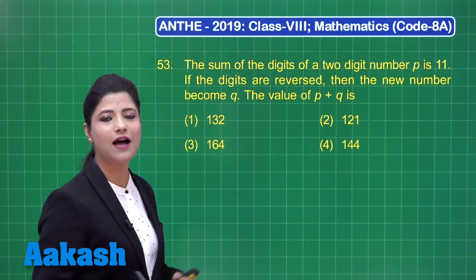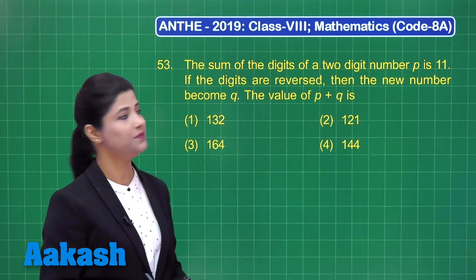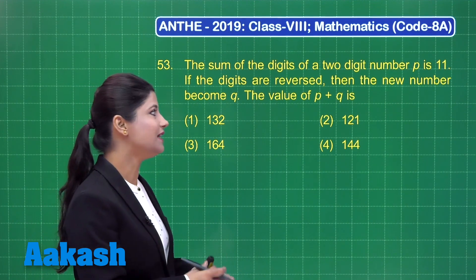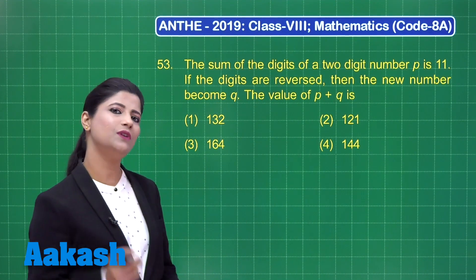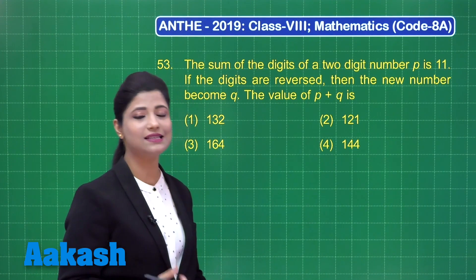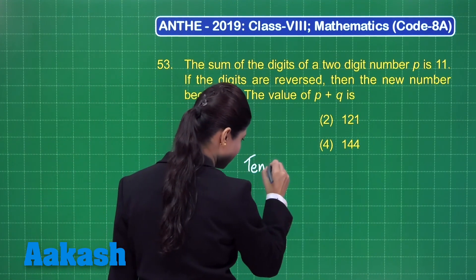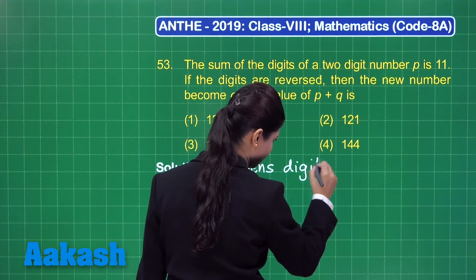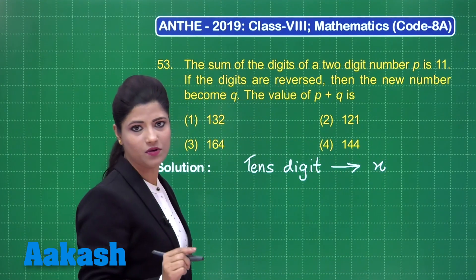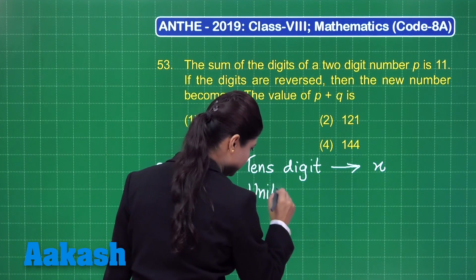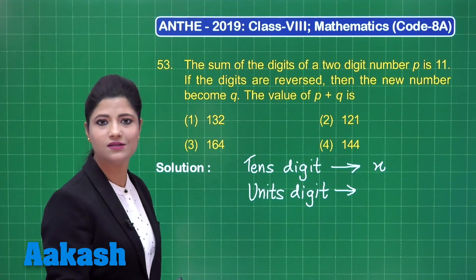Let us take up our next question. Here I have question number 53, which states that the sum of the digits of a two-digit number P is 11, and if the digits are reversed, then the new number becomes Q. The value of P plus Q is to be found from four given options. When we talk about a two-digit number, you have a digit at the tens place and a digit at the units place. Let us consider that the tens digit is x.